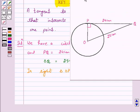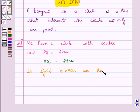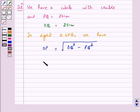So we have OP is equal to under root of OQ square minus PQ square. OP is equal to under root of 25 square minus 24 square. And this is equal to under root of 49, because 25 square minus 24 square is equal to 25 plus 24 into 25 minus 24. Now, 25 plus 24 is 49 into 1. It is equal to 49 only. So this is equal to 7 cm.